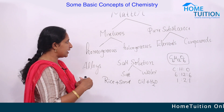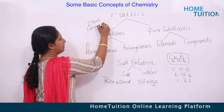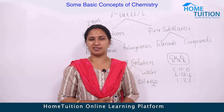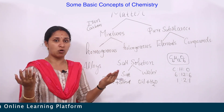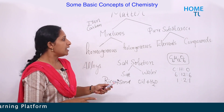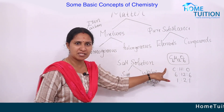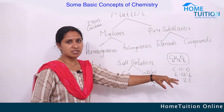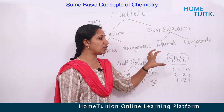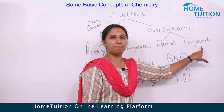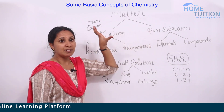Pure substances are classified into elements and compounds. An element — like iron or carbon — is made up of the same type of atoms or molecules. In the case of compounds, elements combine together to form them. Glucose is a compound because carbon, hydrogen, and oxygen — each an element — combine together in a fixed ratio to form glucose.